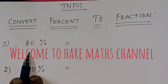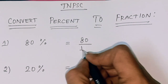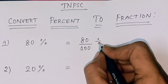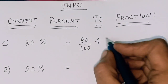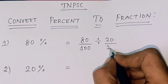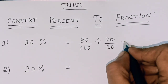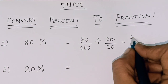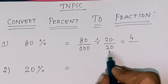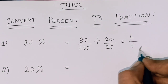First sum: 80%. So 80 divided by 100. Divider is 20 — both numerator and denominator divided by 20. 80 divided by 20 equals 4, and 100 divided by 20 equals 5.